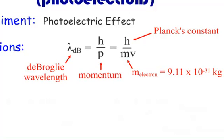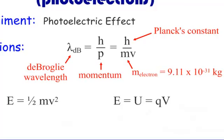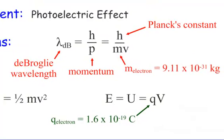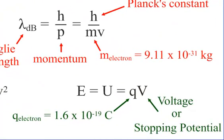If you want to find the speed of the electron in order to find momentum, you're going to use energy equals ½mv², because we have a particle that has mass and therefore has speed. Energy will often be the same as when we had a photon. There's also an equation: energy equals potential energy, which is q (the charge of an electron, 1.6×10⁻¹⁹ coulombs) times the voltage, or what we call the stopping potential — or even the starting potential.